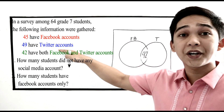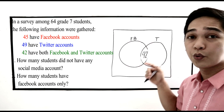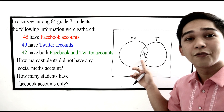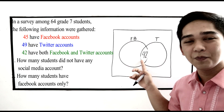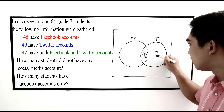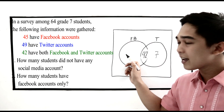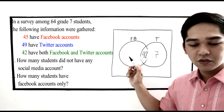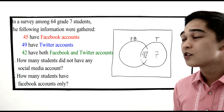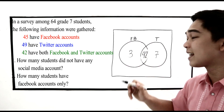Next, 49 have Twitter accounts. From the 49, we subtract the intersection: 49 minus 42 equals 7. So we write 7 — these are the students with Twitter accounts only. Next, 45 have Facebook accounts: 45 minus 42 equals 3. So we place 3 here for Facebook accounts only.